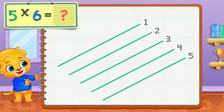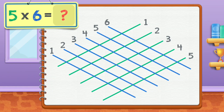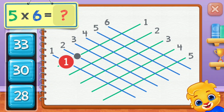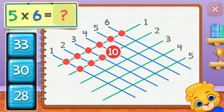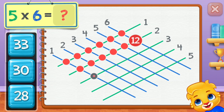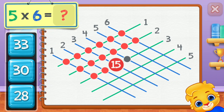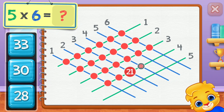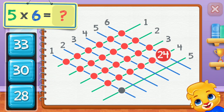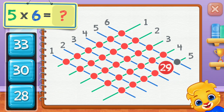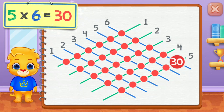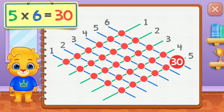Five times six equals... One, two, three, four, five, six, seven, eight, nine, ten, eleven, twelve, thirteen, fourteen, fifteen, sixteen, seventeen, eighteen, nineteen, twenty, twenty-one, twenty-two, twenty-three, twenty-four, twenty-five, twenty-six, twenty-seven, twenty-eight, twenty-nine, thirty. Five times six equals thirty.